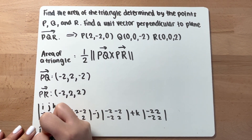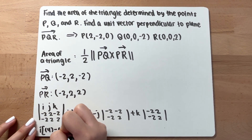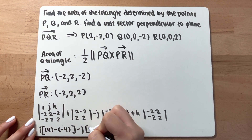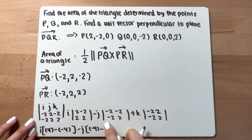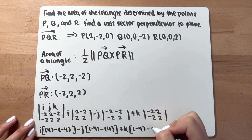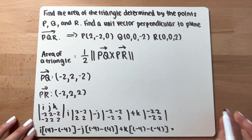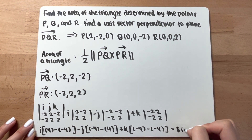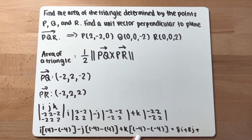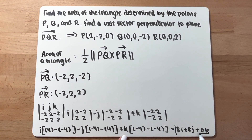Computing the result: i gives (2 times 2) minus (2 times negative 2) = 4 minus negative 4 = 8. For j: (negative 2 times negative 2) minus (negative 2 times 2) = 4 minus negative 4 = 8, but with the minus j sign this becomes negative 8, and the double negative makes it positive 8j. For k: (negative 2 times 2) minus (negative 2 times 2) = negative 4 minus negative 4 = 0. So PQ × PR = 8i + 8j + 0k.